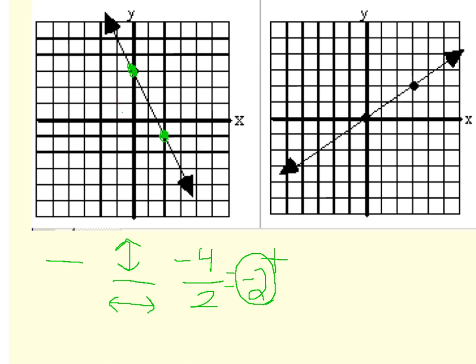Now this makes sense because we said the answer should be negative because from left to right the line is going down.